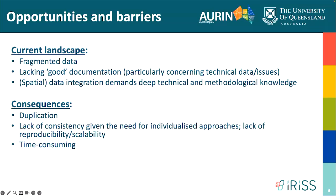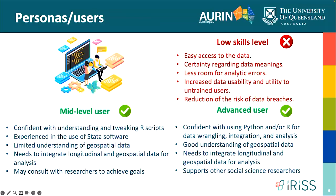We identified some personas and user groups that can use this tool. We have three target groups: low skill level, mid-level, and advanced user level. The main difference between these three kinds of users is their domain knowledge about health and spatial data as well as their coding skills. When we want to do data merging, we need knowledge and awareness about decisions that can affect the whole research project. We focus primarily on mid-level and advanced users, but in the future we want to build a better interface to reach lower skill level users too.